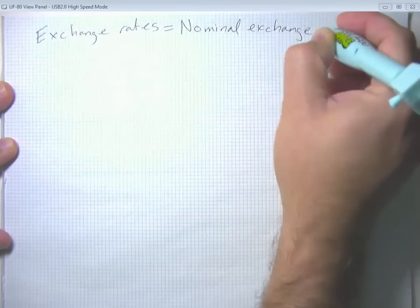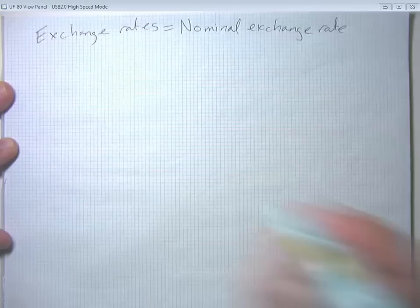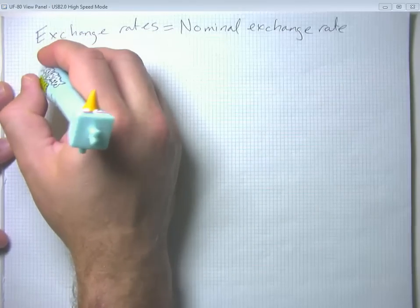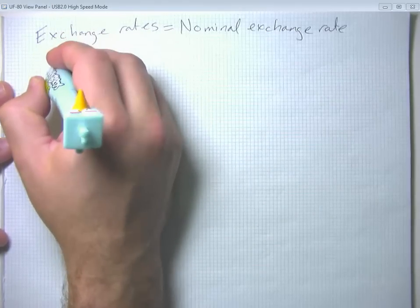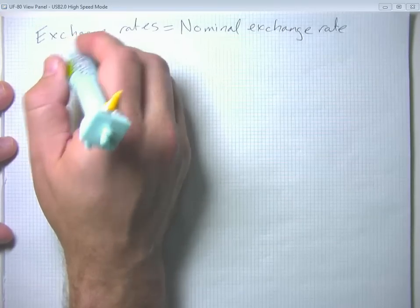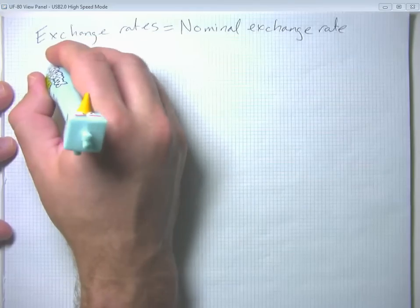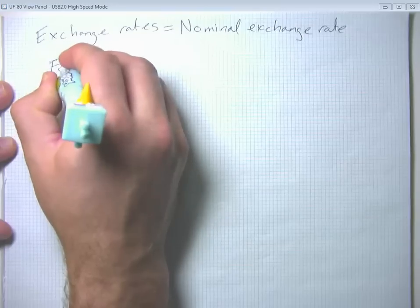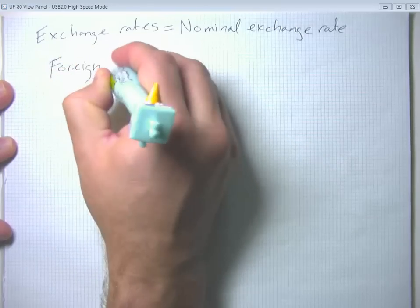So the nominal exchange rate is the one you're going to hear reported in the newspaper. And it can be reported either in foreign currency units per dollar or dollars per foreign currency unit. Both are equally fine. We're going to go ahead and discuss it in terms of foreign currency units per dollar.